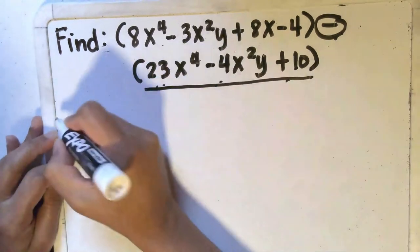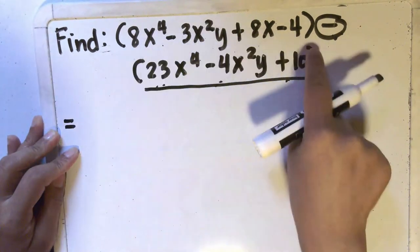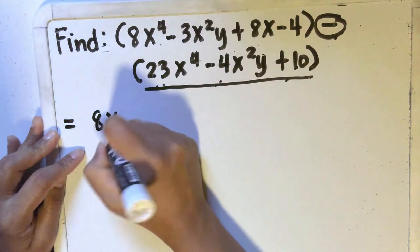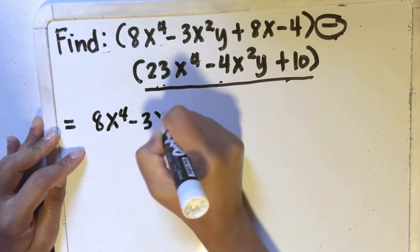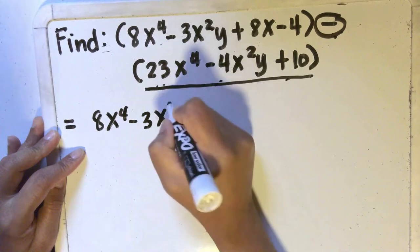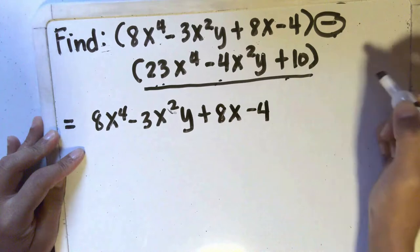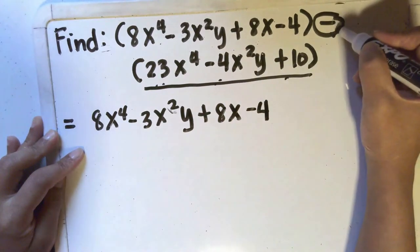What does that look like? First, remove the parentheses and copy the first expression. So 8x to the 4th minus 3x to the 2nd power y plus 8x minus 4. And then think about this as a negative sign.